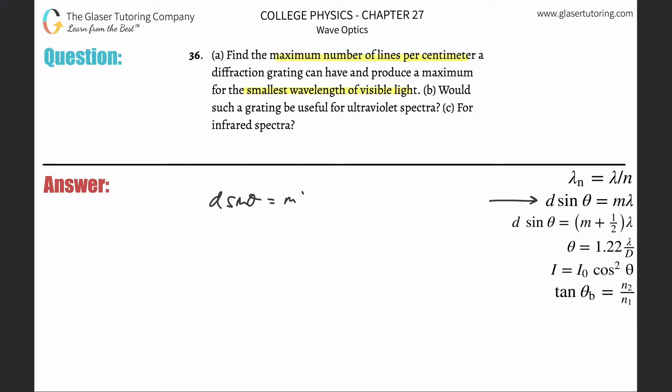I'm not even going to mention what the variables mean anymore. We got to solve this for d, and the reason why is because d will tell us the distance per line. We then have to inverse that though to find the maximum number of lines per distance. So just keep that in mind.